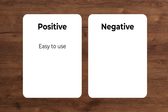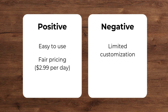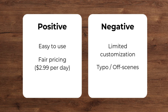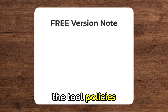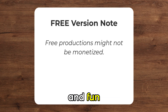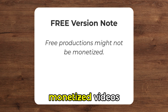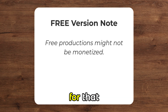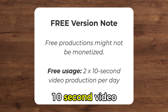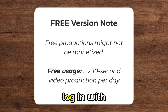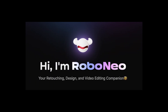Let me share my thoughts about RoboNeo. On the positive side, it's really easy to use and their chat feature makes sure all the details like format and specs are collected from your side. They have fair pricing at $2.99 for daily usage. But if you're doing a special project that needs detailed customization, RoboNeo might not be the right fit, and sometimes there are typos or off scenes like we saw at the end of the iPhone ad. Always check the tool policies — free creations are great for learning and fun but not always for ads or monetized videos. Each day you get enough credits for two 10-second video productions, and you can log in with a different email up to two times per day for extra free credits.